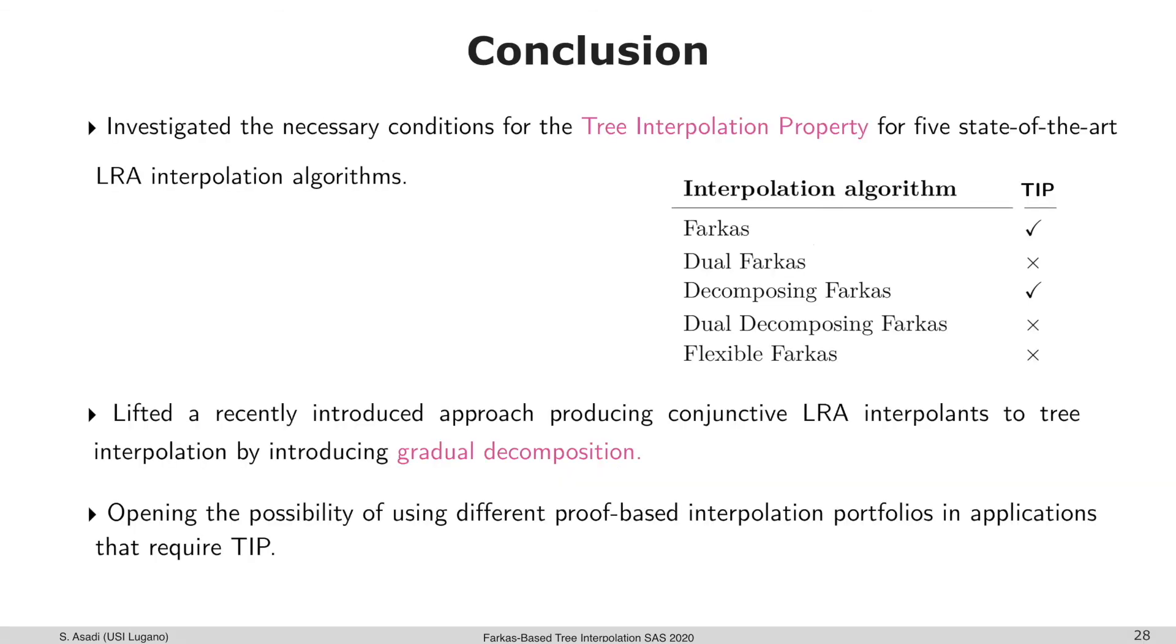I'm going to conclude with this slide. In this work, we investigated the necessary conditions for the tree interpolation property for five state-of-the-art LRA interpolation algorithms. Our results are summarized here. We also lifted the recently introduced approach producing conjunctive LRA interpolants to tree interpolation by introducing gradual decomposition. We believe this work would open the possibility of using different proof-based interpolation portfolios in applications that require tree interpolation.